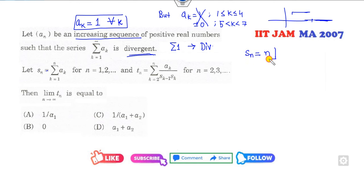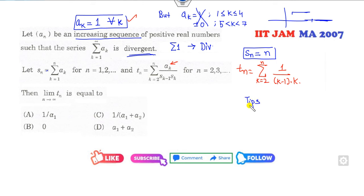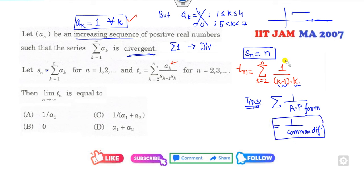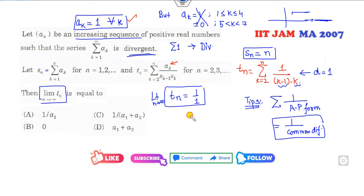What is my s_n? If I take the summation of 1, it will be n. Now I substitute this value into t_n. The summation from k=2, with a_k = 1, divided by (k−1)·k. Remember, whenever you have a series of AP form — here k−1 and k — the summation is always 1 over the common difference. The common difference is 1, so the answer of t_n is 1/1. Taking the limit as n approaches infinity, the answer is 1. Looking at the options, with a_k = 1, A is the right answer.